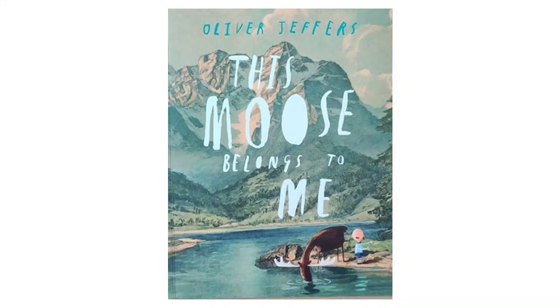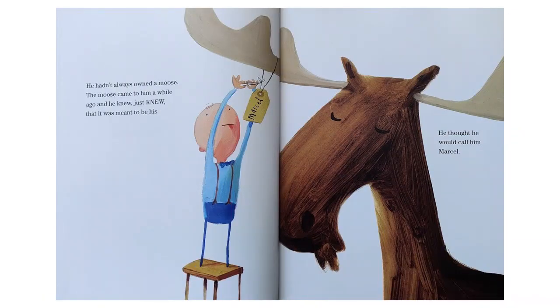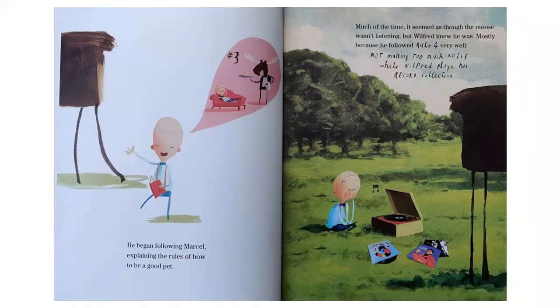This Moose Belongs to Me by Oliver Jeffers. Wilfred owned a moose. He hadn't always owned a moose. The moose came to him a while ago and he knew, just knew, that it was meant to be his. He thought he would call him Marcel. He began following Marcel, explaining the rules of how to be a good pet.